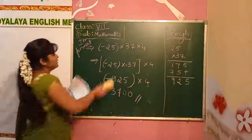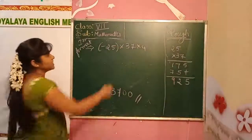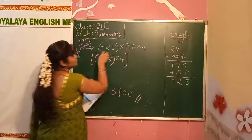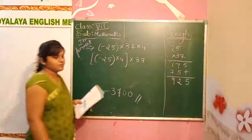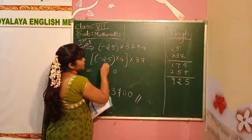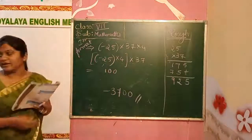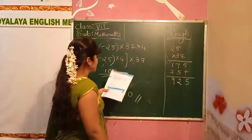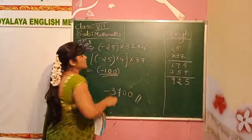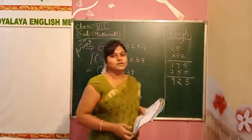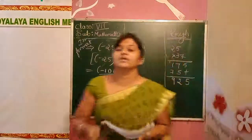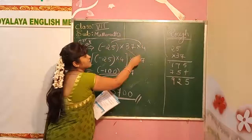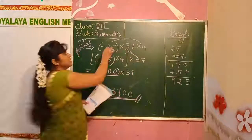You can also change the format. We can do it like this: multiply minus 25 into 4 first as one group, and take 37 out. Multiplying minus 25 into 4 gives minus 100. Then multiply minus 100 with 37. We get minus 3700 — the same answer. Here I grouped these two, and here I grouped the other two. These are easier formats for making multiplication simpler.